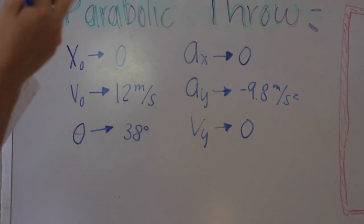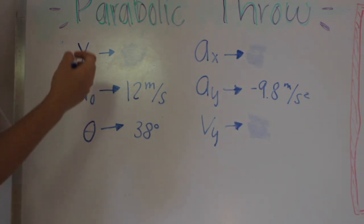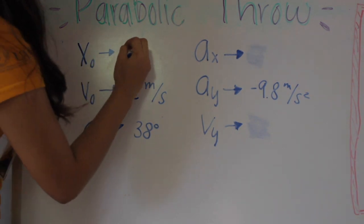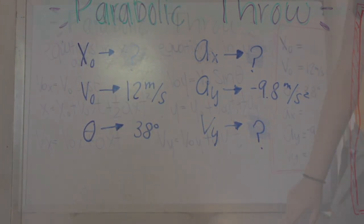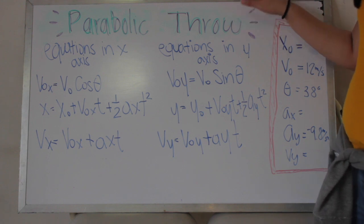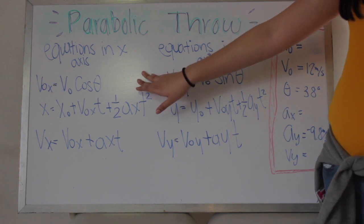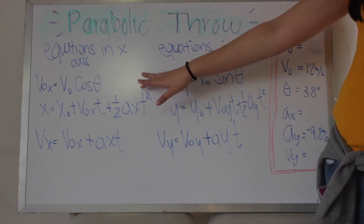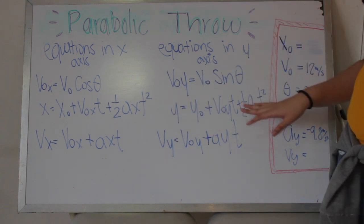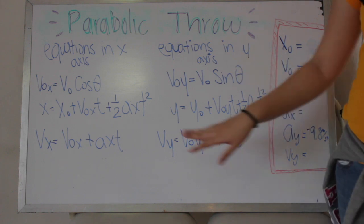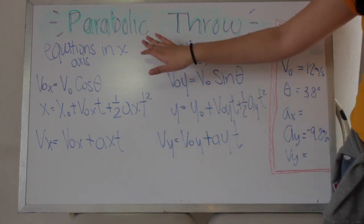The 0 written in the data means the missing values we need to find. Now we are going to explain the equations. The first equation gives you the initial velocity in each axis. The second one gives you the total distance in X. The third one gives you the final velocity in X.